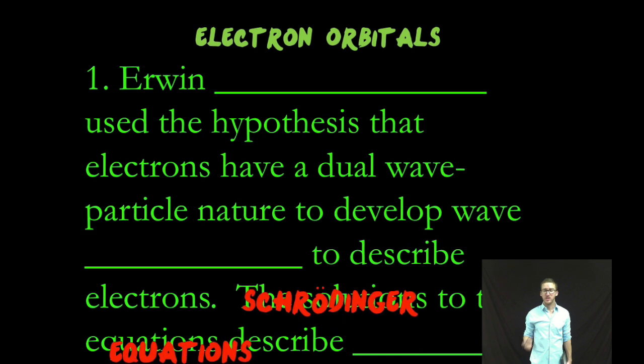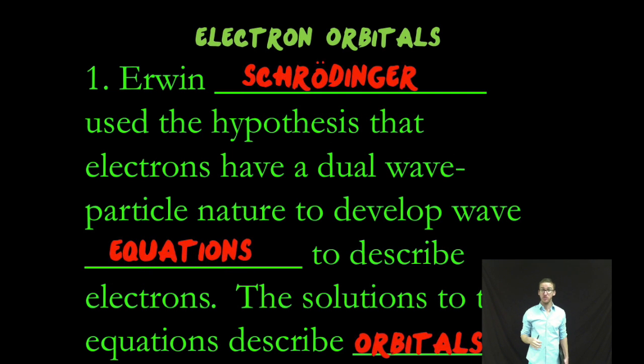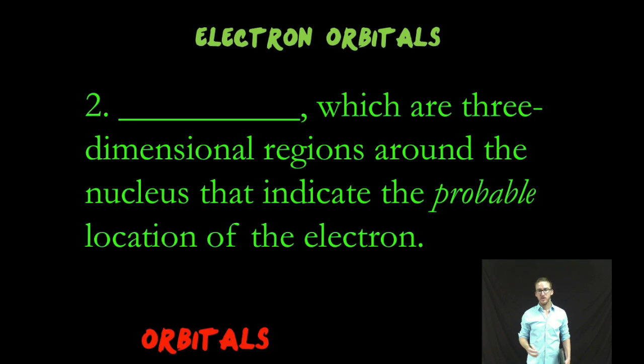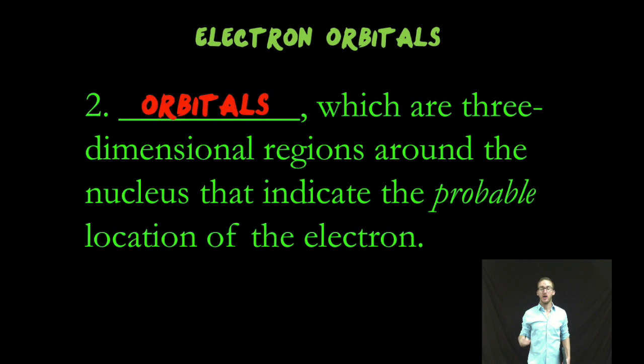Now, it was Erwin Schrodinger who used the hypothesis that electrons could have a dual wave particle nature to develop what we call wave equations to describe electrons. And the answer or solution to those equations describe the shapes of the orbitals. So orbitals are just three-dimensional regions around the nucleus that indicate the probable or most likely location of the electron.